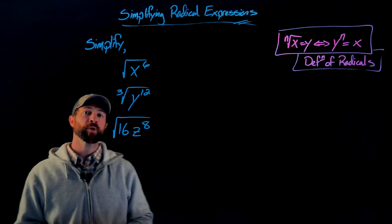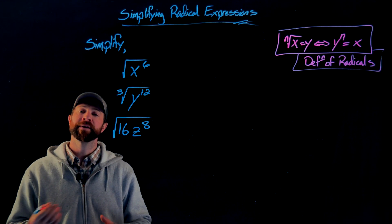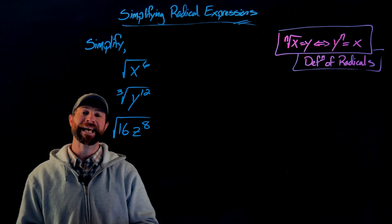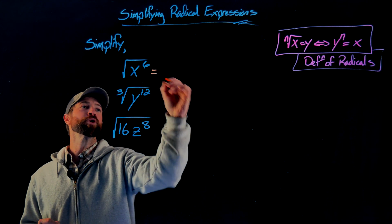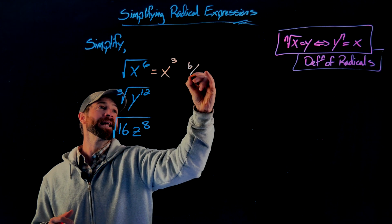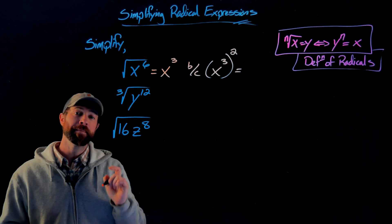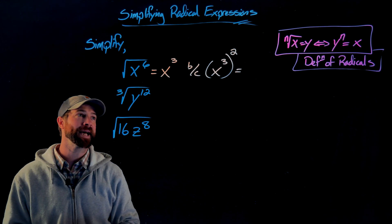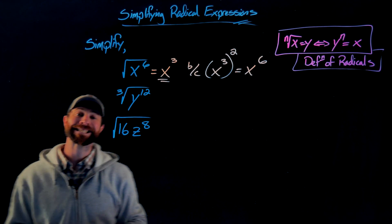Now I'm going to take the square root of x to the sixth, and then the cube root of y to the 12th, and finally a more complicated expression introducing variables and coefficients. The square root of x to the sixth is x to the third, because if you square x to the third — using the rule that raising an exponential expression to another exponent means multiplying exponents — x cubed squared is x to the sixth.